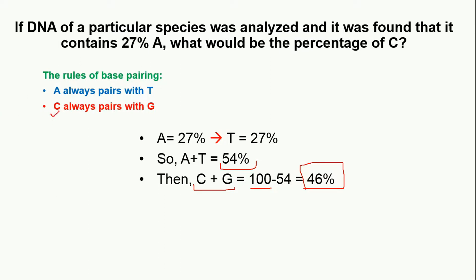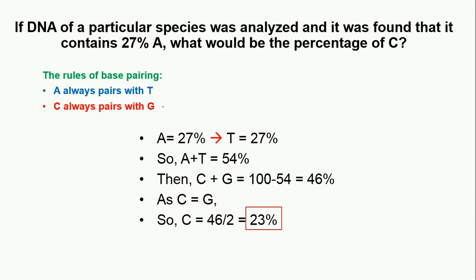We also know that the amount of cytosine will be equal to the amount of guanine. So to find the amount of cytosine, we divide 46% by 2, which gives us 23%. This means this DNA contains 23% cytosine. As a check: 27% adenine + 27% thymine + 23% cytosine + 23% guanine = 100%. This is how you solve the question.